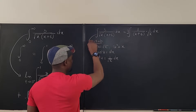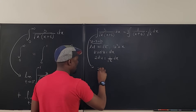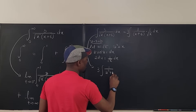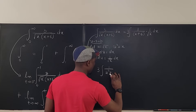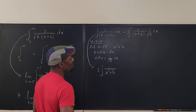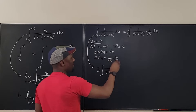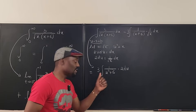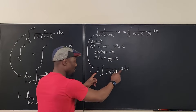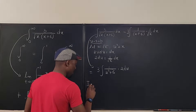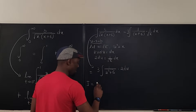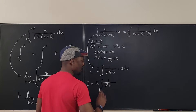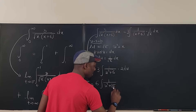Since x equals u squared, the integral becomes 3 times the integral of 1 over (u squared plus 6) times 2 du. At this point, we recognize the form u squared plus 6, which we can write as u squared plus (√6)², and we can use a trigonometric substitution. I'll pull constants together and call the expression I, so I equals 6 times the integral of 1 over (u squared plus (√6)²) du.